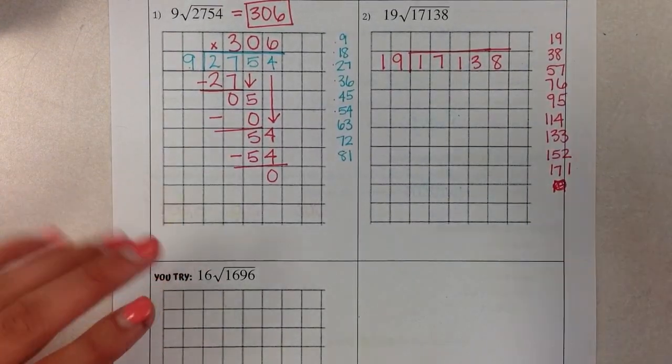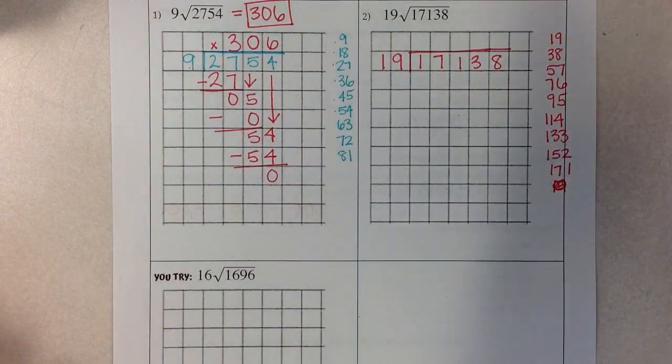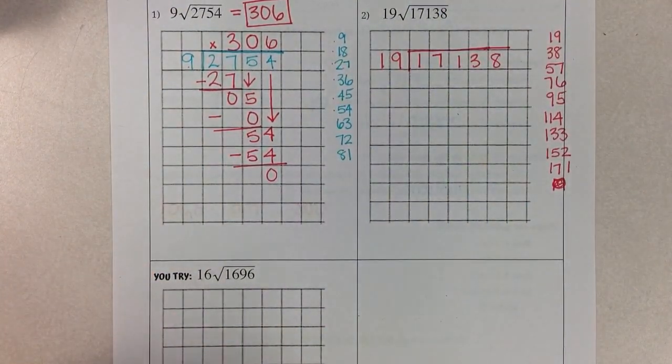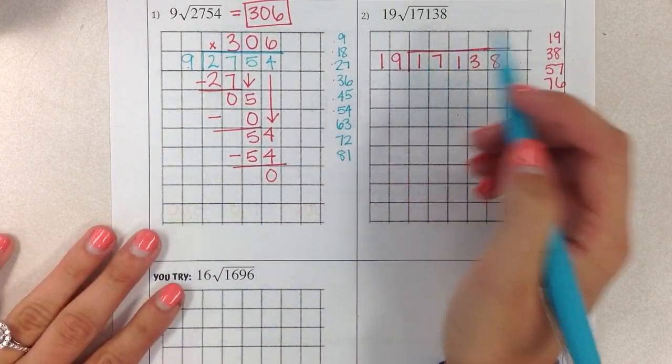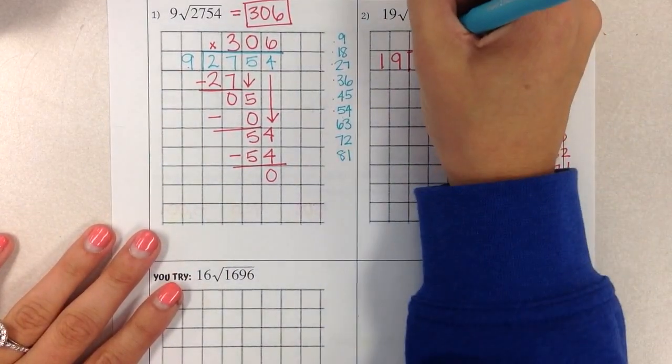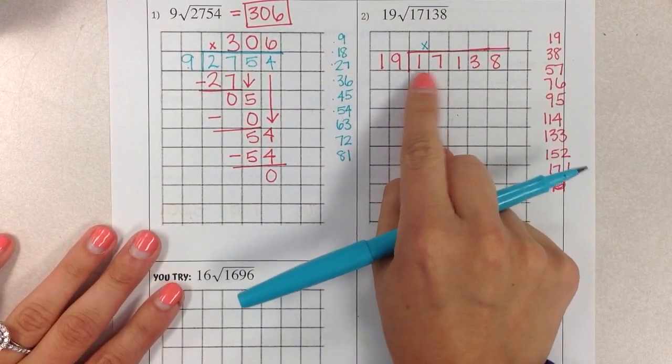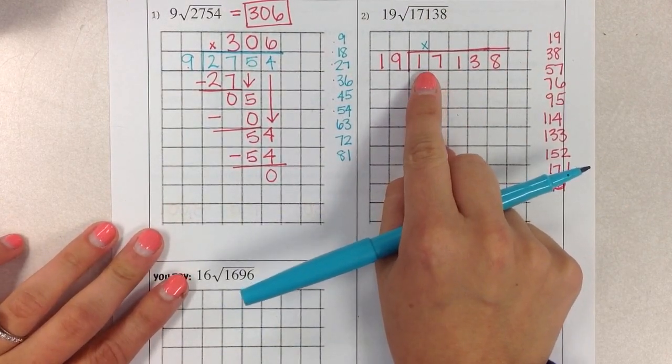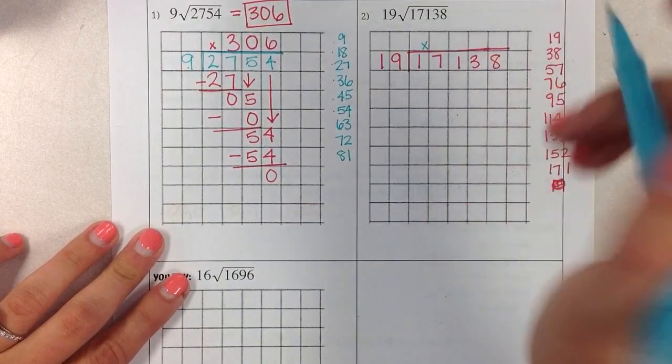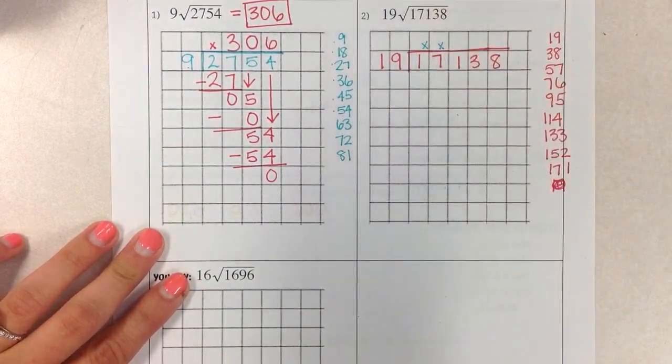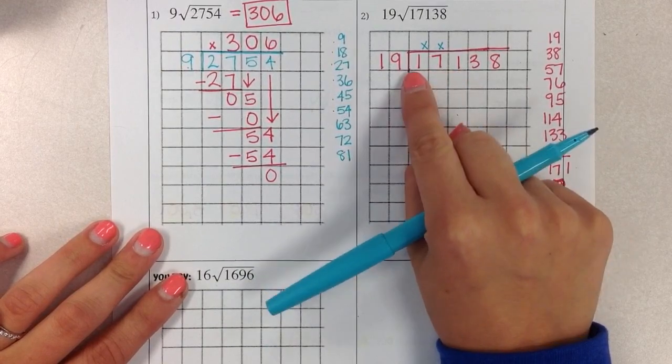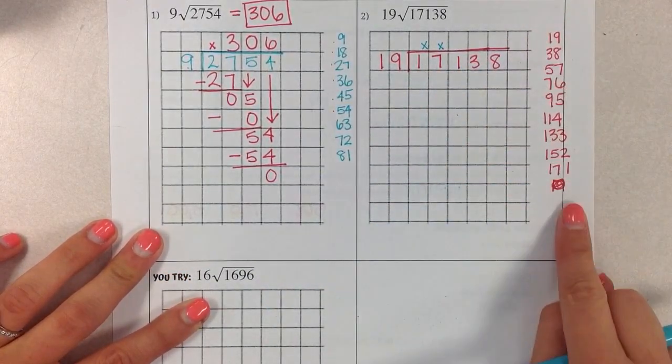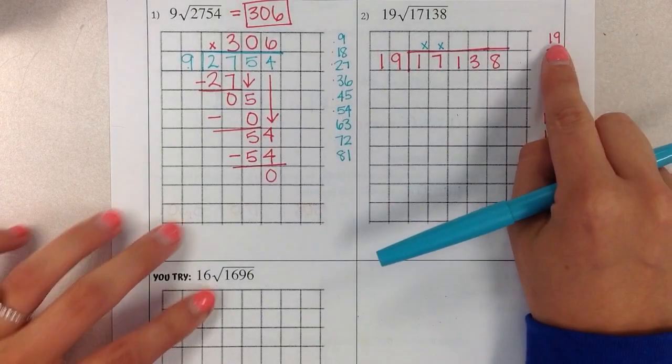Now we can start dividing. I've already listed the multiples, so I don't really actually need to use my multiplication chart right now. So does 19 go into 1? Nope, 1 is too small. I'm going to put an x up there. Now let's look at our 2-digit number. Does 19 go into 17? Again, 17 is too small. I'm going to put an x there. So now we have this 3-digit number that's a little bit more difficult, 171. But since we've got our multiples over here, it should be pretty easy to look at.